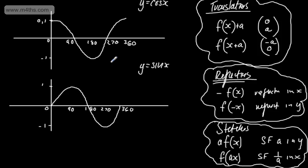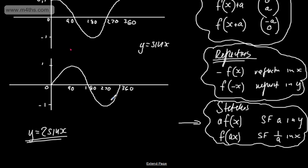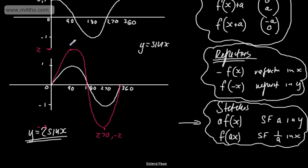Let's sketch y equals 2 sin x. This is a stretch of the form a·f(x), so every y-coordinate is multiplied by 2 and the x-coordinates aren't changed. The maximum becomes 90 comma 2 instead of 90 comma 1, and the minimum becomes 270 comma minus 2 instead of minus 1. So we have a scale factor stretch of 2 in the y-direction.